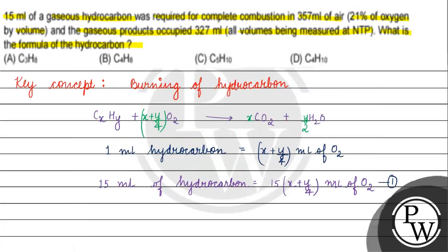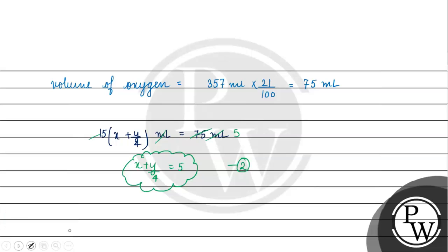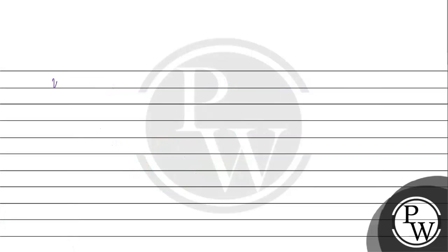Now, my question is what I have mentioned. So we have gaseous product, how much is it given to us? The gaseous product is 327 ml. If we can see the volume of gaseous product, what is it given to us?